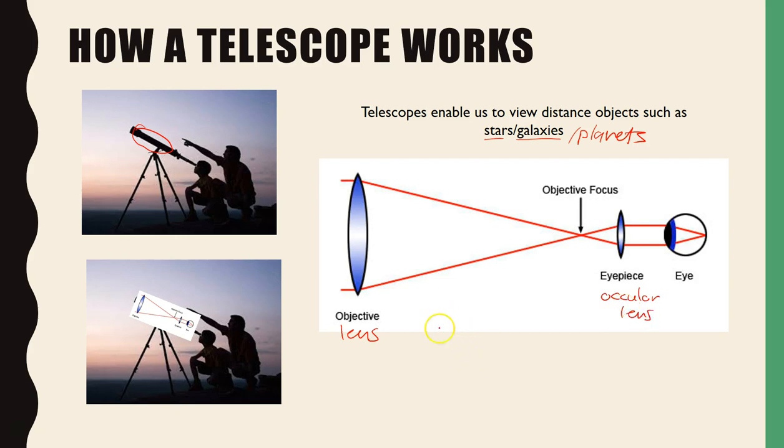These two lenses work to magnify the image and make it appear larger than what it was, enabling us to view distant images which we could not before. It is similar to a magnifying glass, although there are two lenses involved which are responsible for magnifying the image so we can see them.